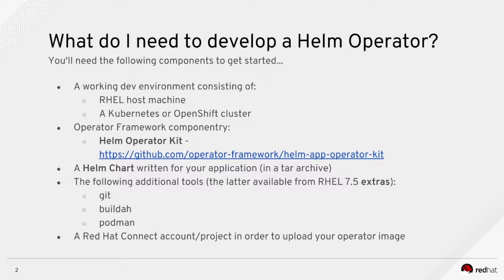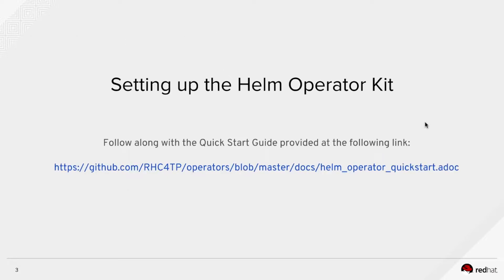You'll also need a Helm chart already written for your application, provided in a tarball archive. It can be downloaded from a remote URL or copied locally into the code repository. You'll also need git, which has always been available on RHEL 7, as well as Buildah and Podman, which are only available on RHEL 7.5 and later from the extras repository. You'll also need a Red Hat Connect account and project set up in order to push your resulting operator container image to the registry for scanning and ultimately publishing.